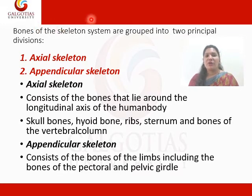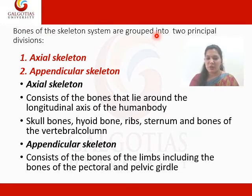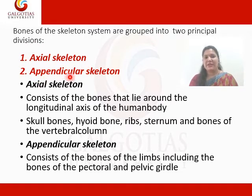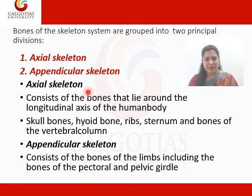The bones of the skeleton system are grouped into two principal divisions. Bones are divided into two patterns, two principal divisions. The first pattern is axial skeleton and the second is appendicular skeleton. Today we will discuss about the axial skeleton only.